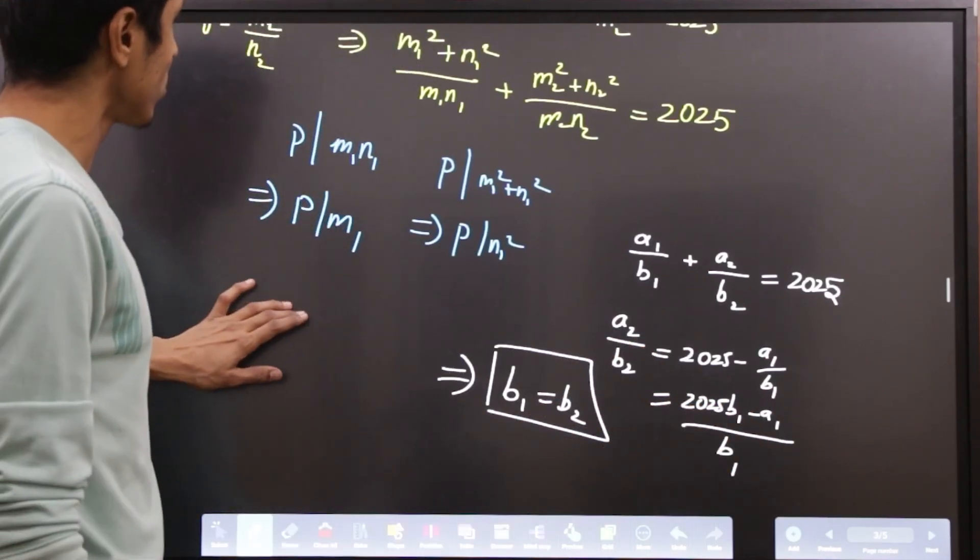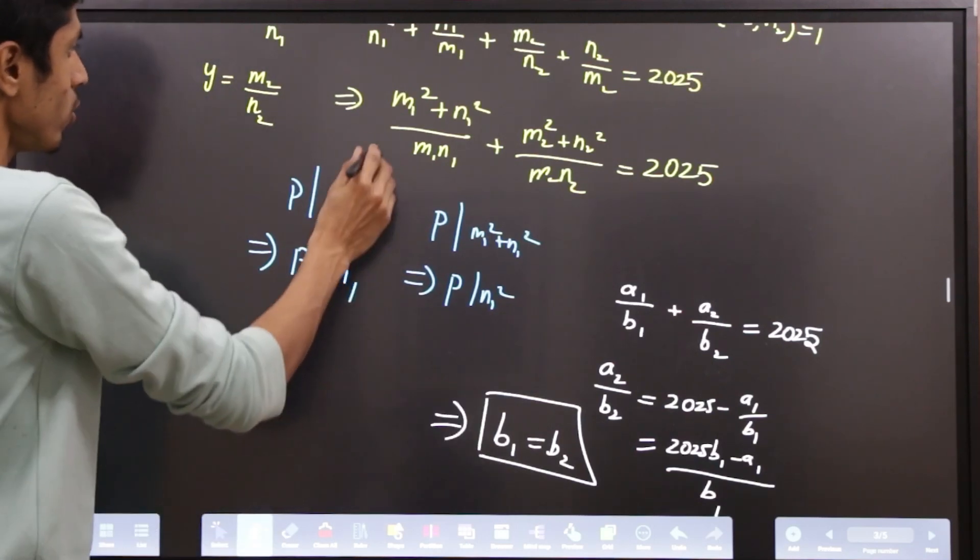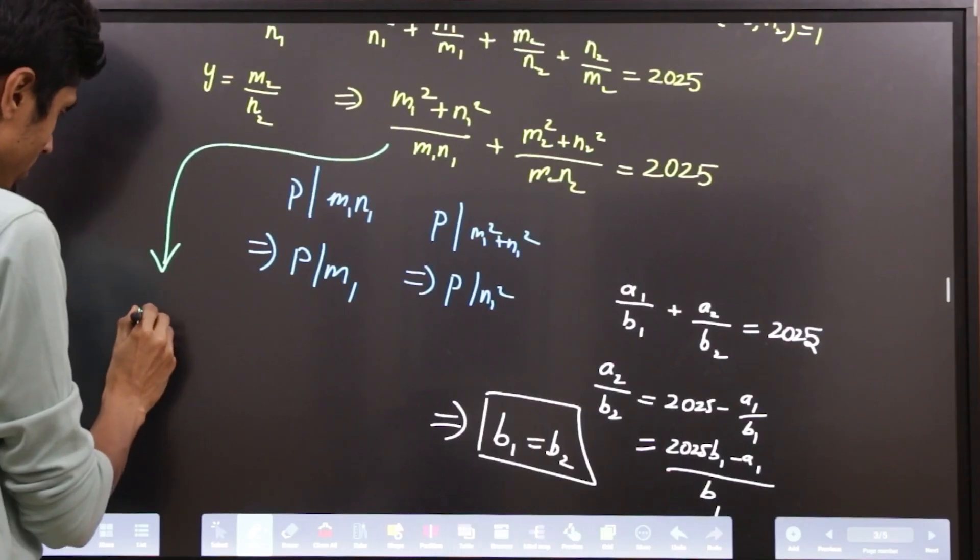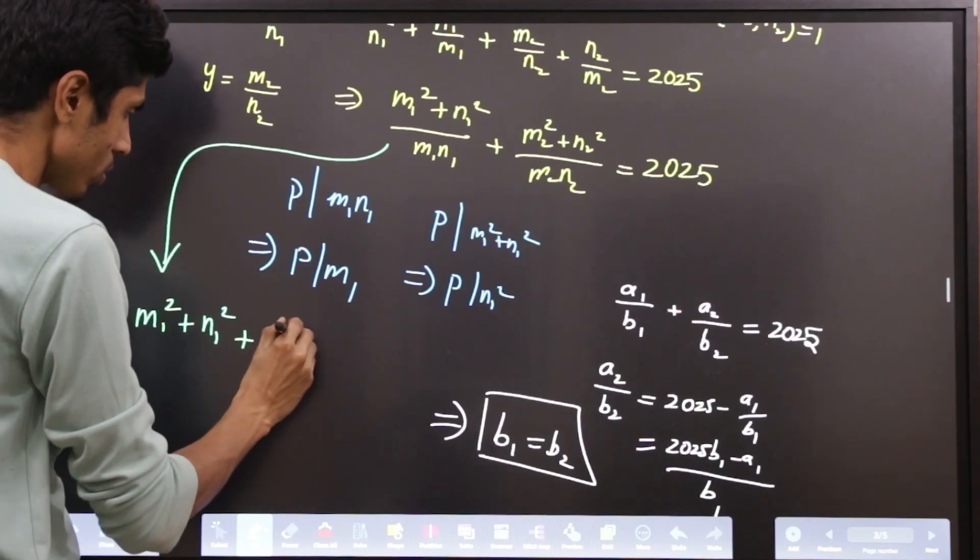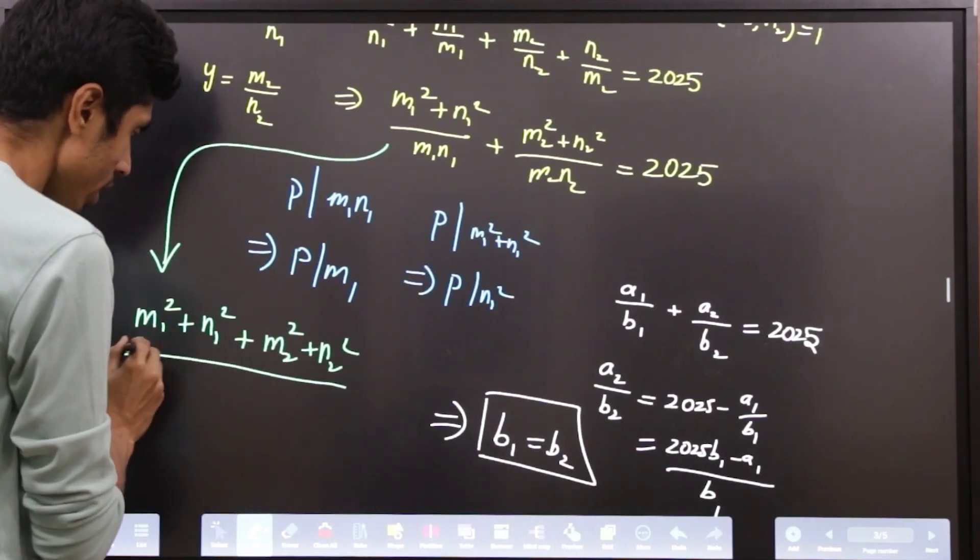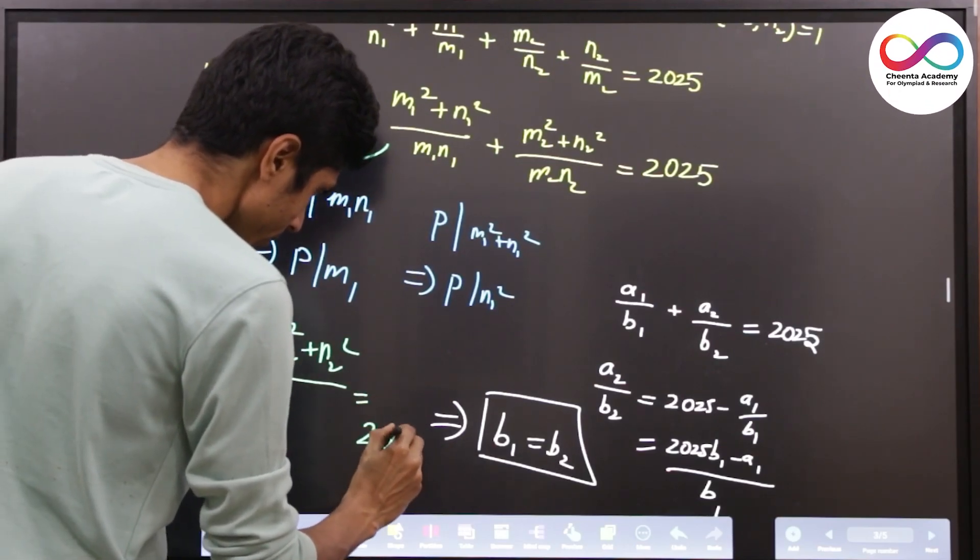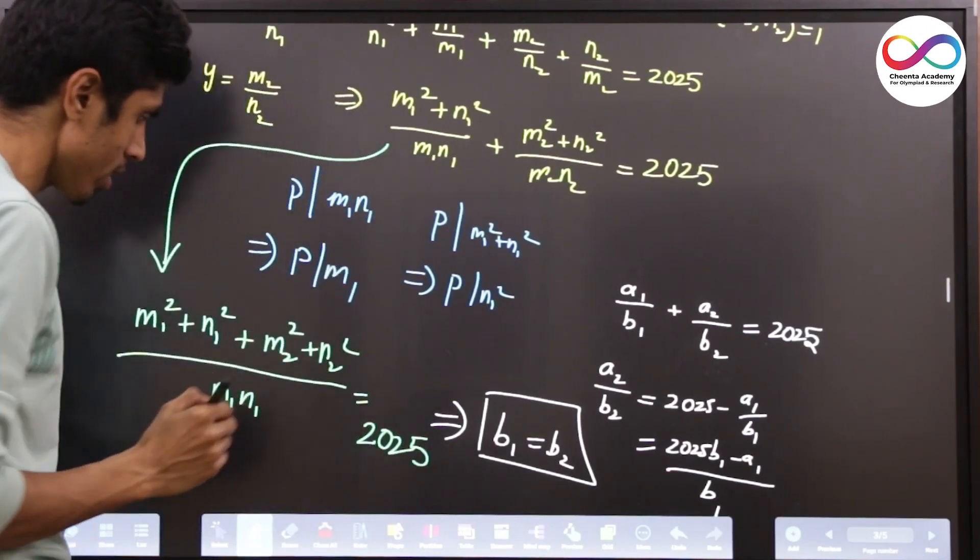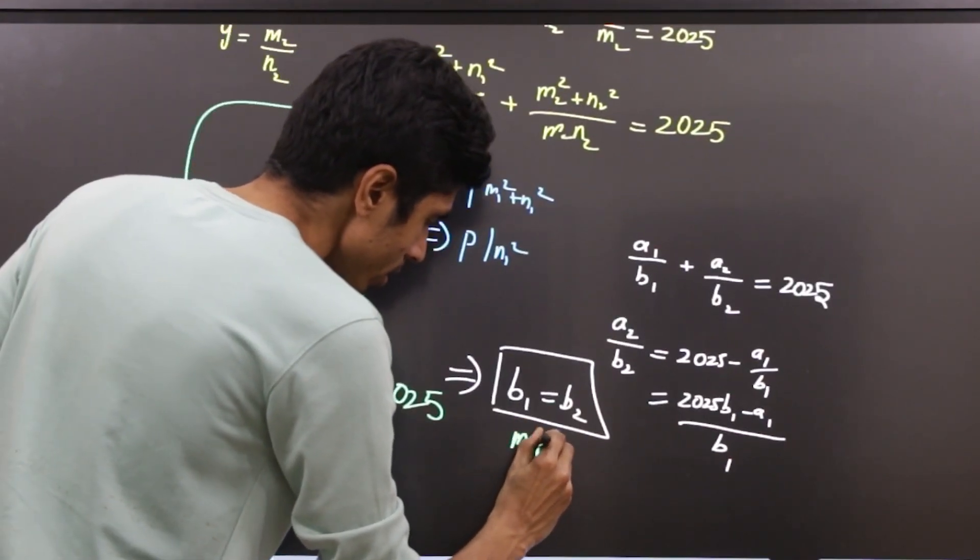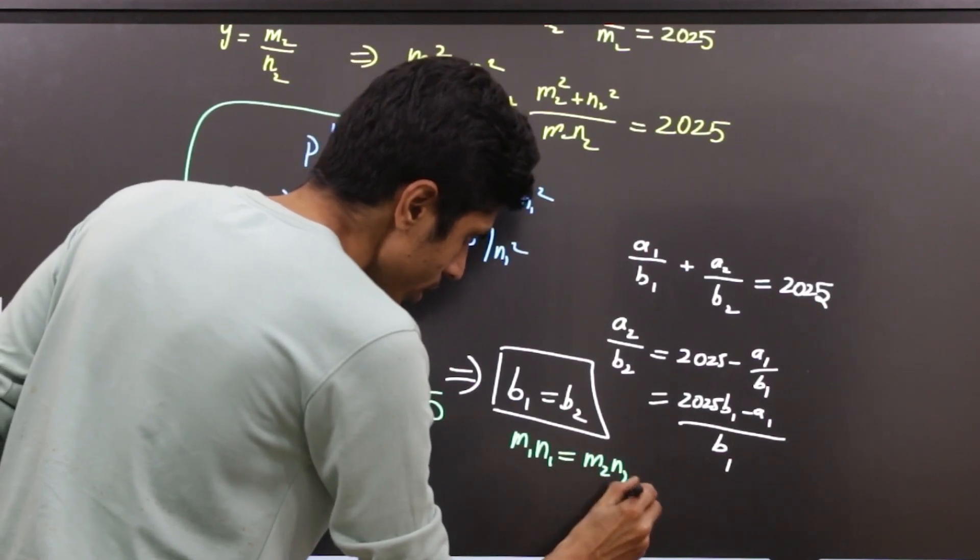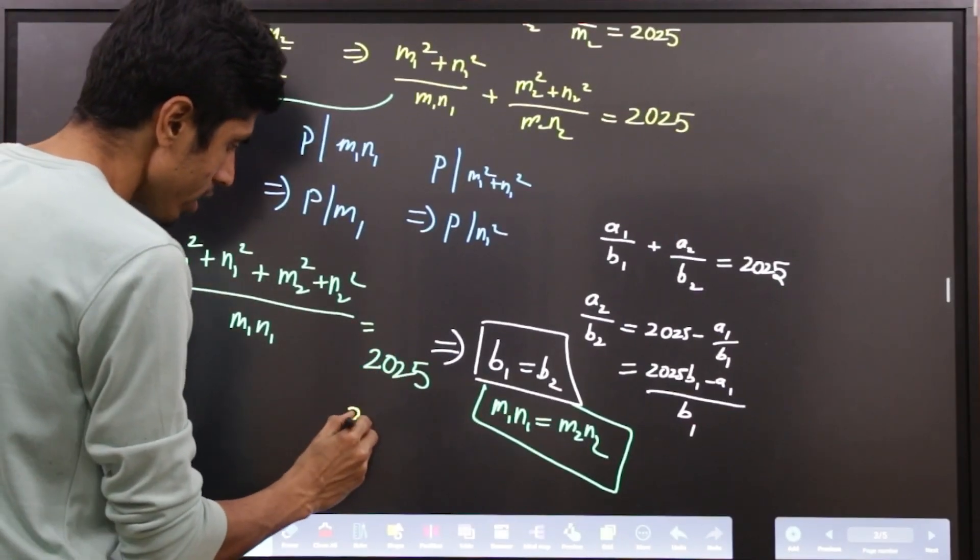So you can thus rewrite this as (m1² + n1² + m2² + n2²)/(m1·n1) = 2025. Because m1·n1 and m2·n2 are equal, so we have m1·n1 = m2·n2 as b1 is m1·n1 and b2 is m2·n2. Notice that 2025 is divisible by 3.